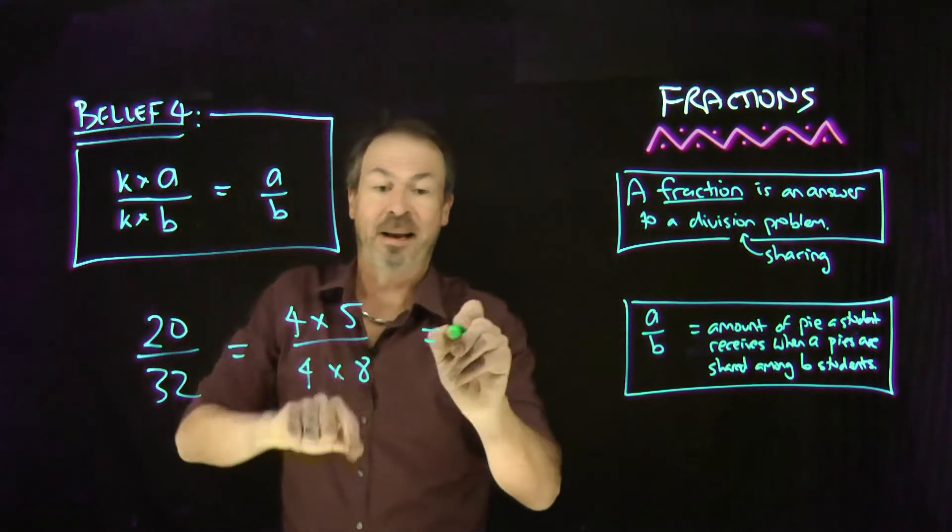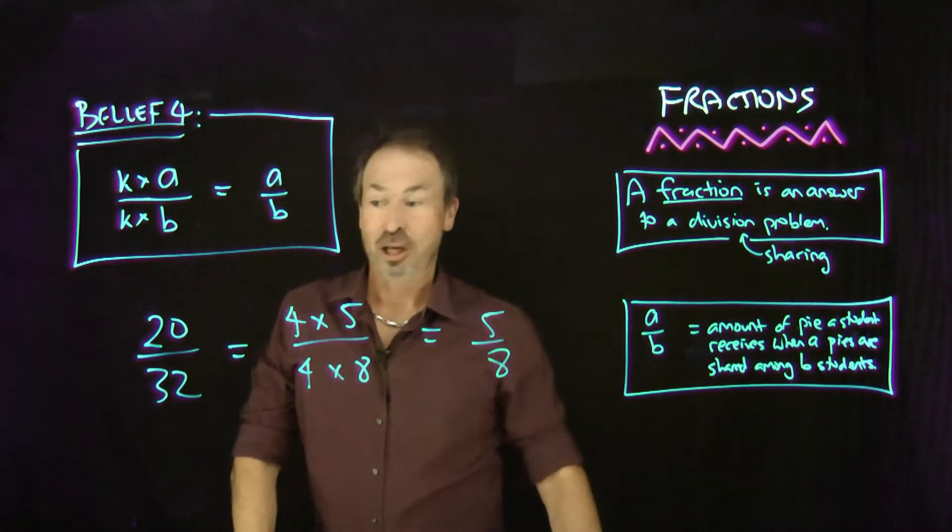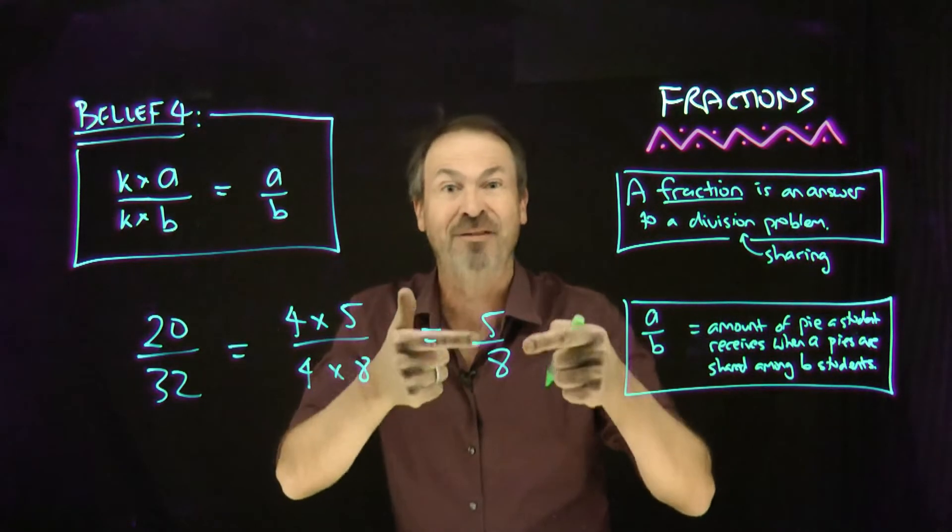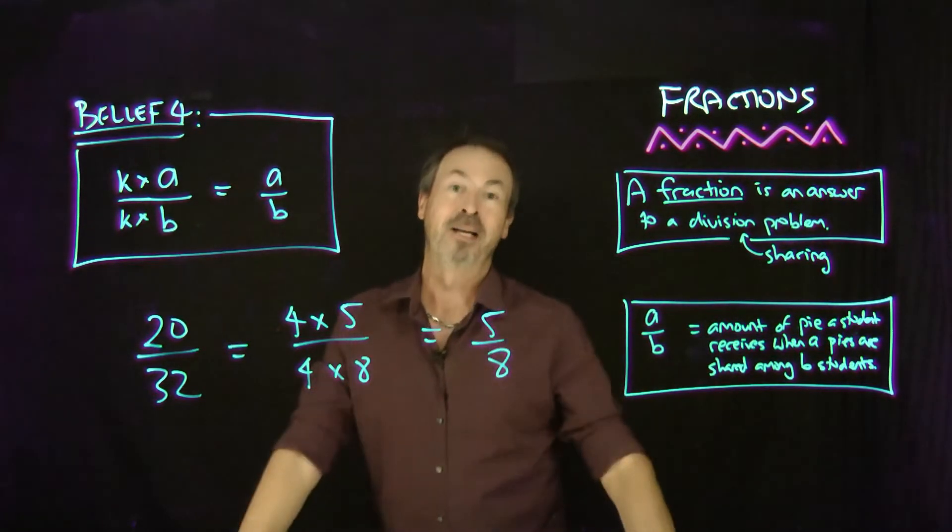People often say they just cancel. I'm going to be left with 5 eighths. So apparently, sharing 20 pies amongst 32 students is absolutely the same as sharing 5 pies for 8 students. And that, I do admit, looks simpler.